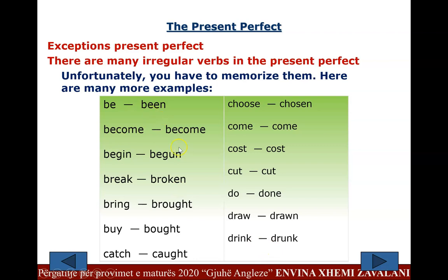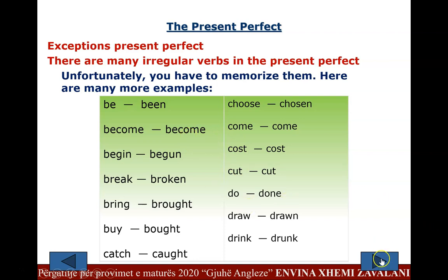A method that helped me when I was in the early stages of learning English was writing these verbs ten times each. In your notebook, it would be a good idea to write each of these irregular verb forms ten times. It's a lot of work, but it will pay off in the end.